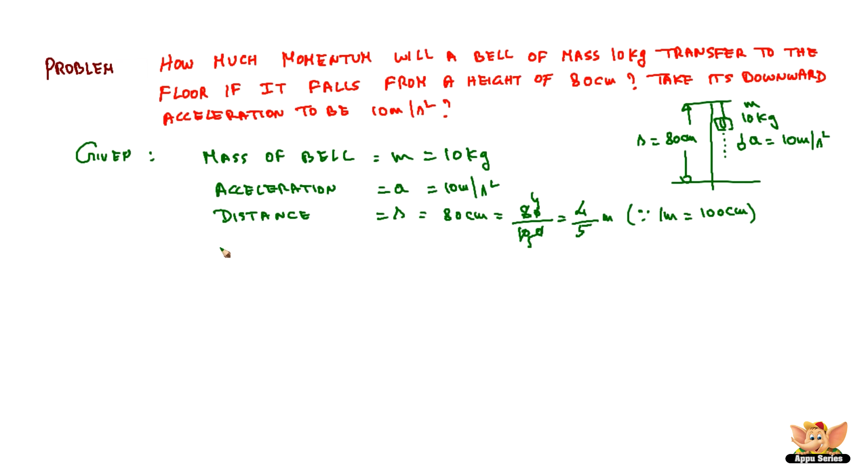Now in order to find out momentum, what we need is velocity. Mass we have, momentum is m into v. So mass into velocity, we know the mass 10 kg, and velocity we need to find. To find velocity we have the parameters s and a, acceleration and distance. And also we have one more, which is the initial velocity. It is starting from rest, so u is 0. Hence we can find final velocity.